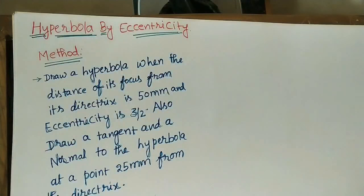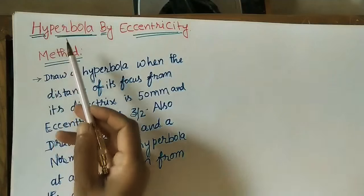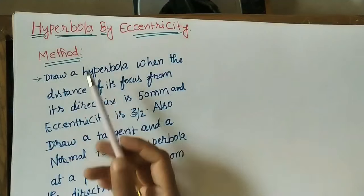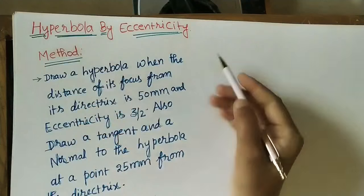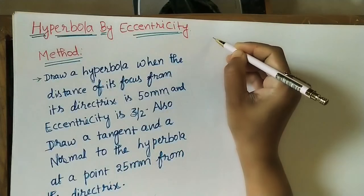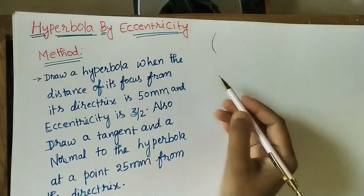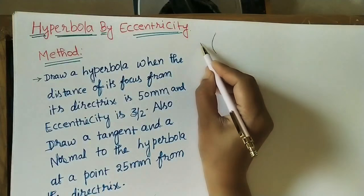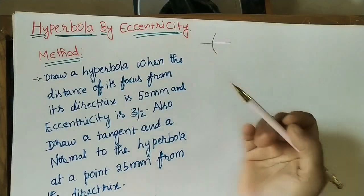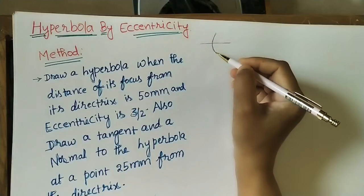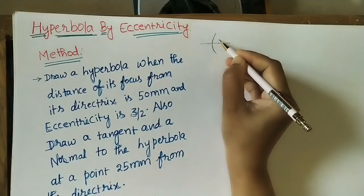Hi to all. Today we will discuss how to do a hyperbola by the eccentricity method. As we know, a hyperbola is a curve. It has one axis of any length, and for this hyperbola one fixed point will be there on the axis, called the focus.